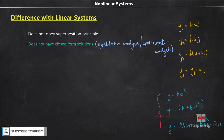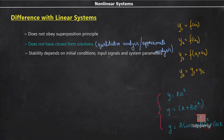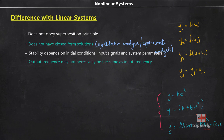The third difference is that in the case of a linear system, stability depends on the system parameters only. However, when it comes to non-linear systems, stability depends on initial conditions, input signals, as well as system parameters. Another difference lies in the frequency of system input and output. In linear systems, the output has the same frequency as the input. In non-linear systems, the output frequency usually contains additional frequency components and sometimes doesn't even contain the input frequency at all.